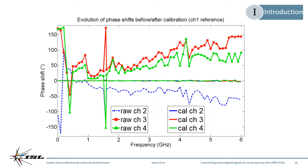We re-measured the phase shifts between our signals before and after this automated phase calibration was performed in software, over the full frequency range of the UBX160. Prior to calibration, these phase shifts tend to increase with working frequency, while after calibration they are significantly reduced over the full frequency range. This is what allowed us to properly steer antenna arrays in receiving mode using the USRPs.